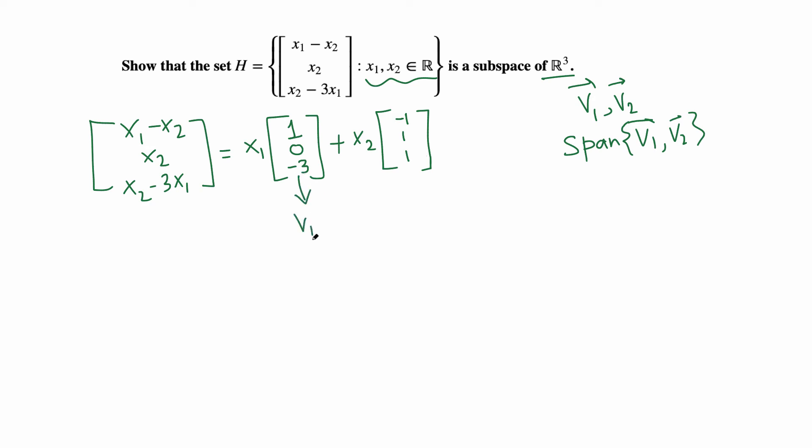If we say this is v1 and this is v2, then H is the span of v1 and v2, where v1 and v2 come from R³. These are all possible linear combinations of v1 and v2 because x1 and x2 are arbitrary real numbers. As soon as we have the span of some vectors, this is a subspace. Therefore, H is a subspace of R³, and that's what we wanted to show.